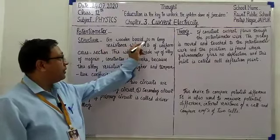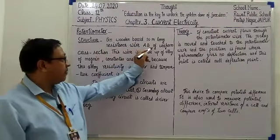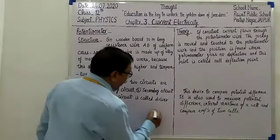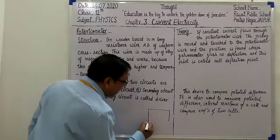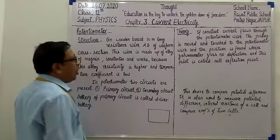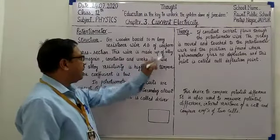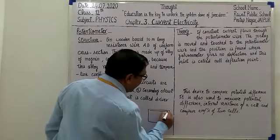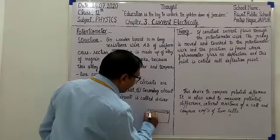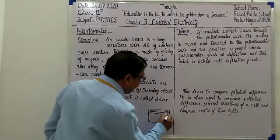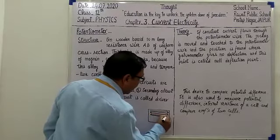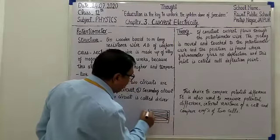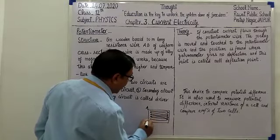On a wooden board, there is a 10 meter long resistance wire AB of uniform cross section. Suppose it is a wooden board with a 10 meter long resistance wire AB of uniform cross section connected. After every 1 meter, with the help of a pulley, rotating — in 10 rounds it is connected on the wooden board. So suppose this is point A and this is point B.